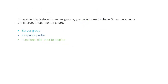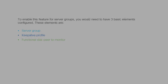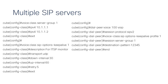To enable this feature for server groups, you will need to have three basic elements configured. These elements are: server group, keepalive profile, and a functional dialpeer to monitor. Now, to enable this feature for server groups, let's configure the three basic elements.